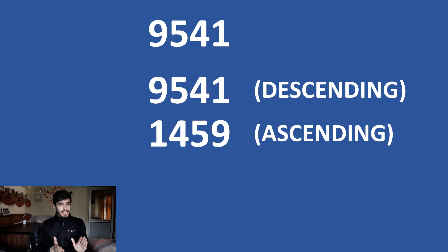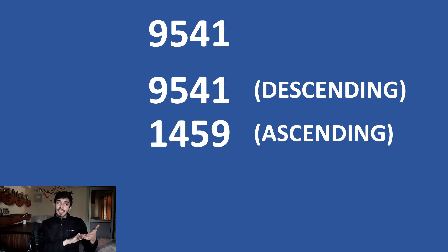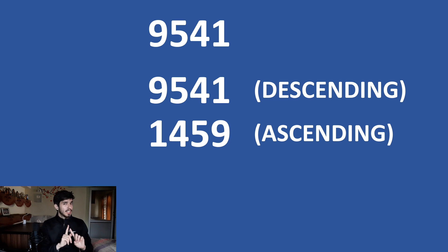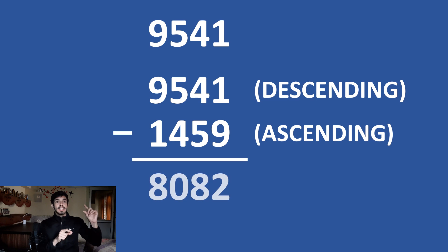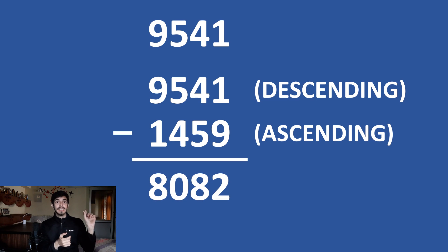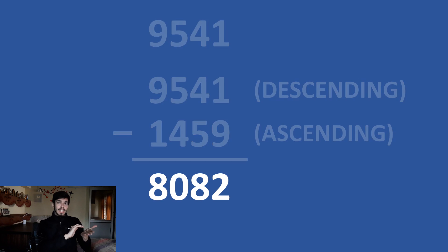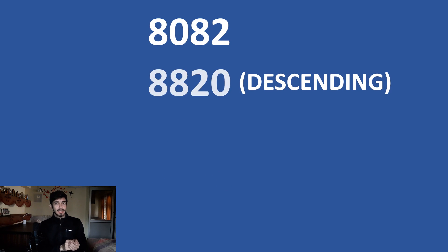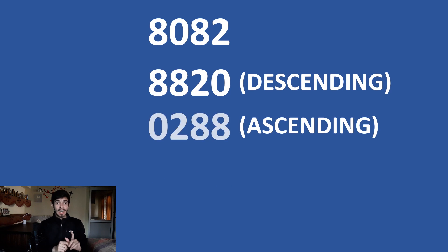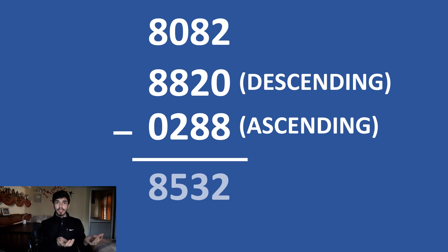One thing to be very clear is that we are not reversing the digits — it's first descending order and then ascending order. For this number it's already in descending order, so when we arrange it in ascending order it may look like we've reversed it, but we have not. Now subtract the ascending one from the descending one. We get 8082. So now we arrange 8082 in descending order, then in ascending order, and subtract. We get 8532.